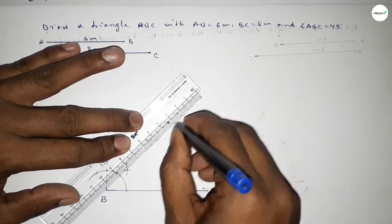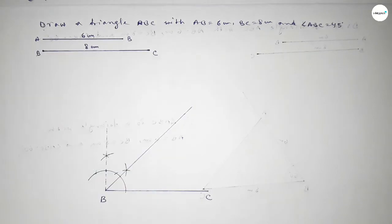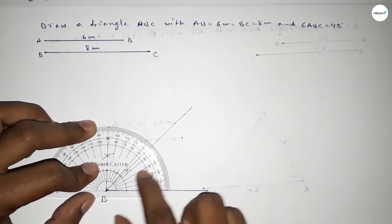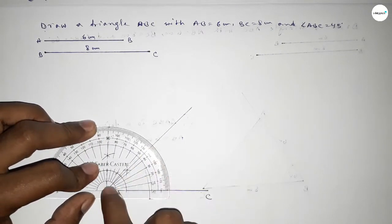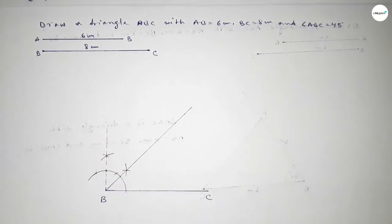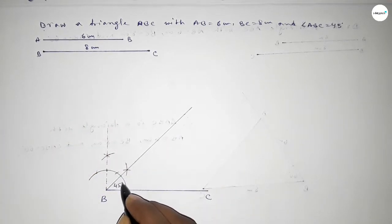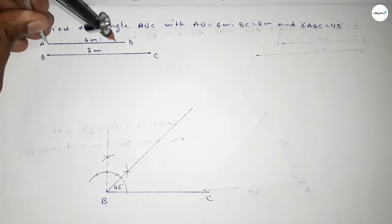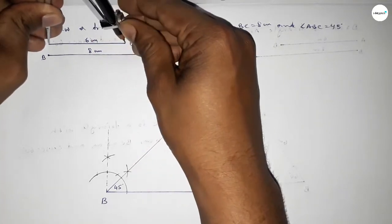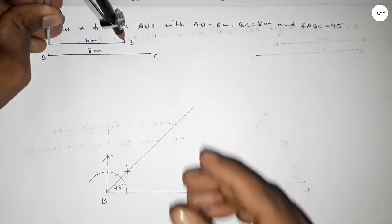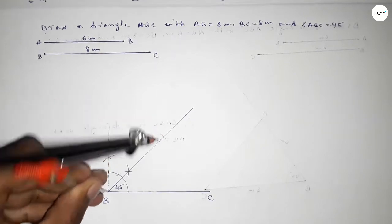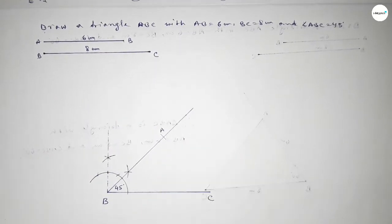Now joining this to get a 45 degree angle. Checking whether it is 45 or not — this is perfectly 45 degrees and this is 90, so this is a 45 degree angle. Now taking the length AB equal to 6 centimeter using a compass and putting the compass on point B and cutting here, taking here point A.